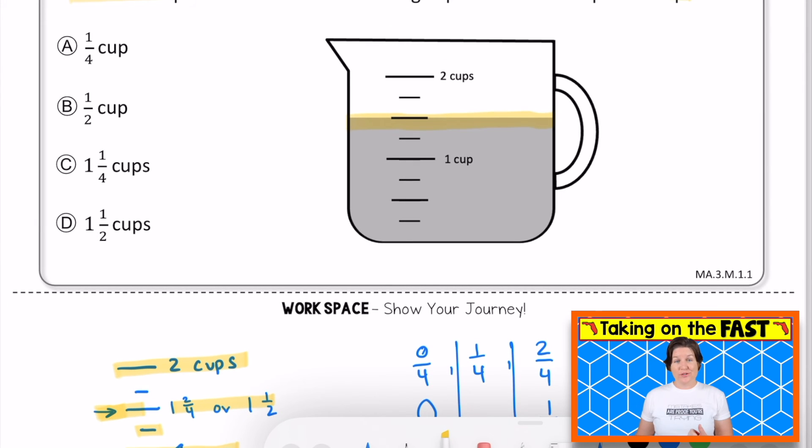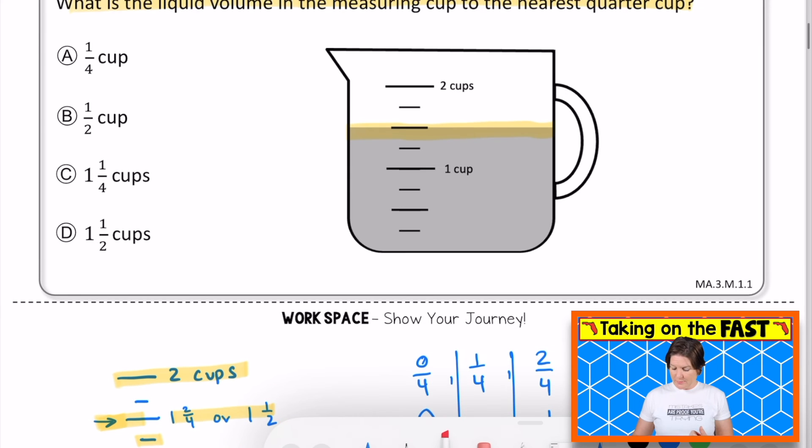And do we see that as an answer choice? We do, don't we? It's right up here, choice D. So I would mark choice D. Let me make sure though.